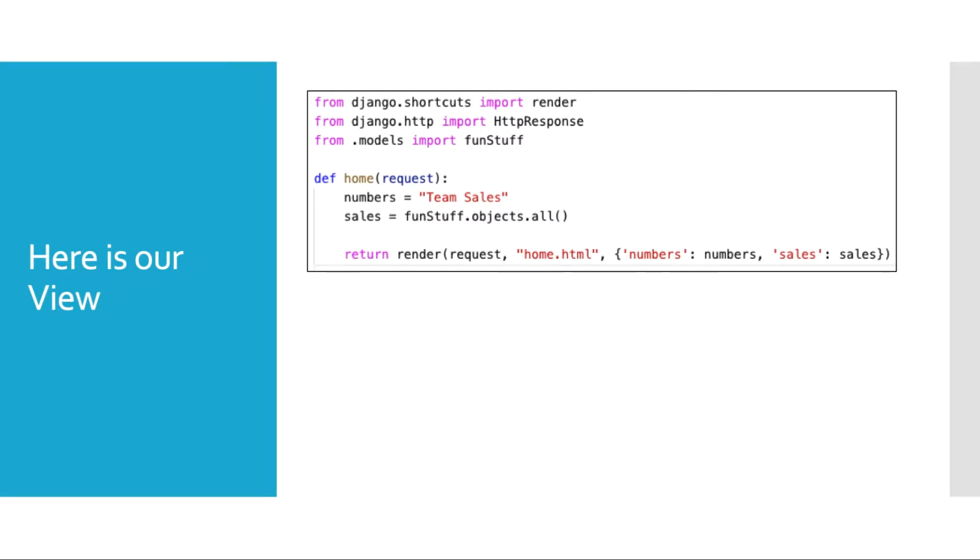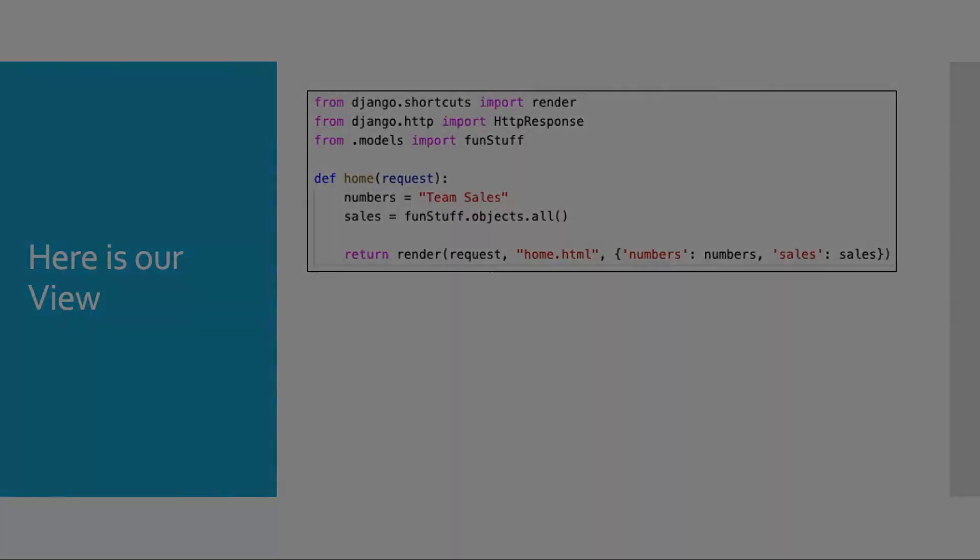We have a view or the logic that will render the data from our model, we call it home, it's a function. We have numbers which will be the header for the HTML page, we'll throw up the string team sales. Then we have a query against our model that we just saw on the previous slide, fun stuff. We'll store that query in the variable sales, so sales equals funstuff.objects.all. And then we will render that through our template.